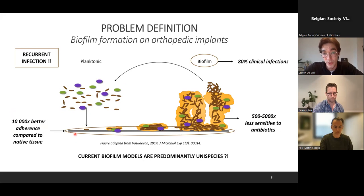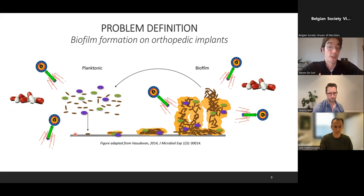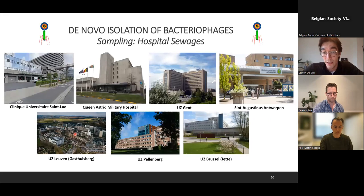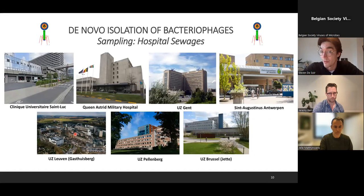For my project, I'm trying to isolate phages and test them in combinations with antibiotics to disrupt biofilm structure. The first thing I needed was to isolate phages. As I wanted orthopedically relevant phages, and water samples are the easiest sampling sources, I thought hospital sewages would be the best source. Of course, it was still COVID time, so you can imagine it wasn't always easy calling up hospitals asking if I could go get some viruses out of their sewages.